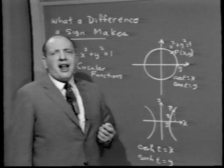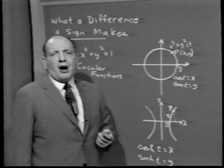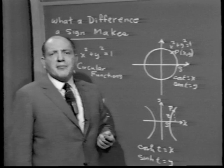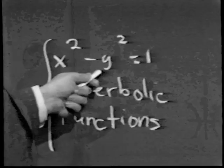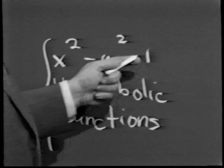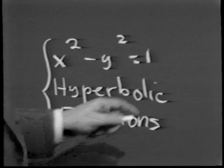Now we'd like to do the same thing with regard to the hyperbolic functions. You may recall that in our lecture on circular functions, I mentioned the hyperbola very briefly. Now I'd like to go back to the hyperbola in more detail — namely, we look at the equation x squared minus y squared equals 1, just a change in sign. The graph of x squared minus y squared equals 1 is the hyperbola.